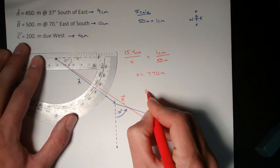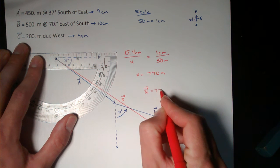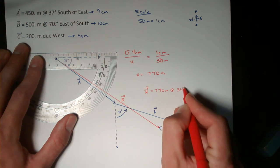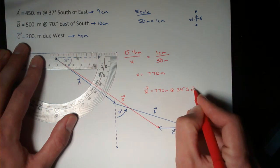So my final answer, my resultant, is 770 meters at 34 degrees south of the east line.